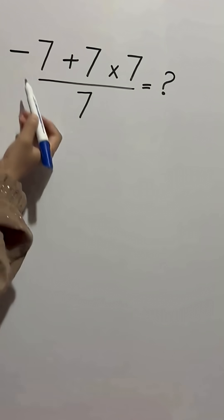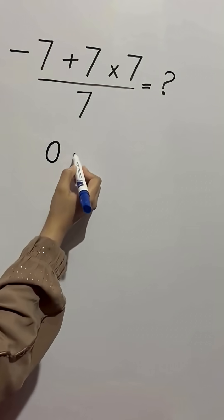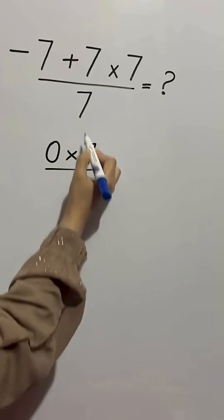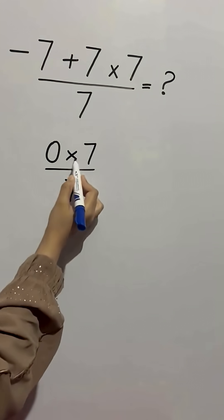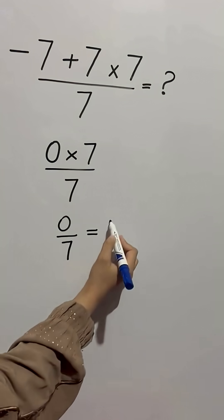At first glance some people do this. They add minus 7 plus 7 is equal to 0. Then think 0 times 7 by 7 is equal to 0 by 7. So the answer must be 0.